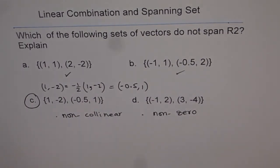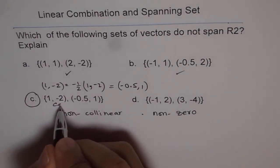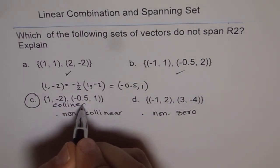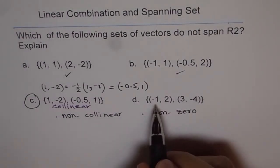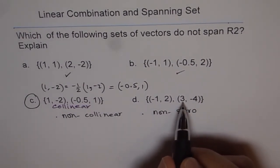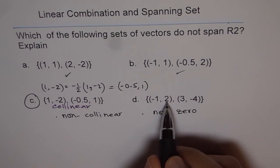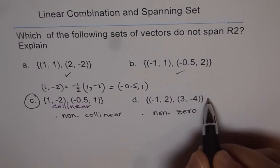For option (d), (-1,2) and (3,-4): If I multiply by -3, I get -6, not -4. So this one is also okay and can span.